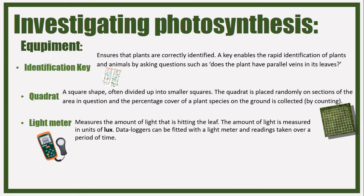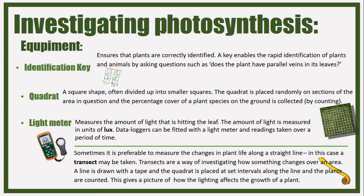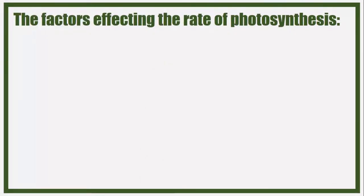When doing this investigation, it's preferable to do it along a transect line, which can be made using a tape measure. A transect is a way of investigating how things change over an area - a line is drawn and the quadrat is placed at set intervals along the line, with the plants counted at each point. This gives a picture of how lighting affects the growth of a plant.